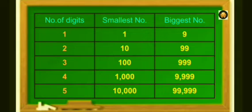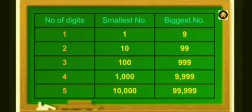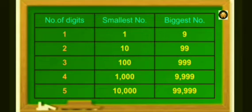The smallest 1-digit number is 1 and the biggest 1-digit number is 9. The smallest 2-digit number is 10 and the biggest 2-digit number is 99. The smallest 3-digit number is 100 and the biggest 3-digit number is 999. The smallest 4-digit number is 1000 and the biggest 4-digit number is 9999. The smallest 5-digit number is 10,000 and the biggest 5-digit number is 99,999.